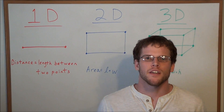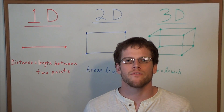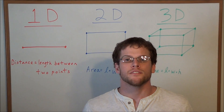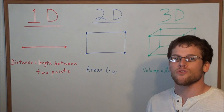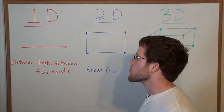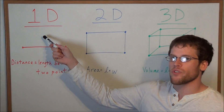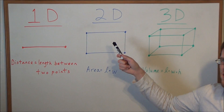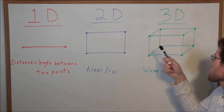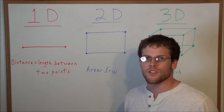Hi, my name is Vincent and today I want to take a look at the difference between distance, area and volume. To do so, I want to progress from a one-dimensional straight line to a two-dimensional rectangle to a three-dimensional rectangular prism.